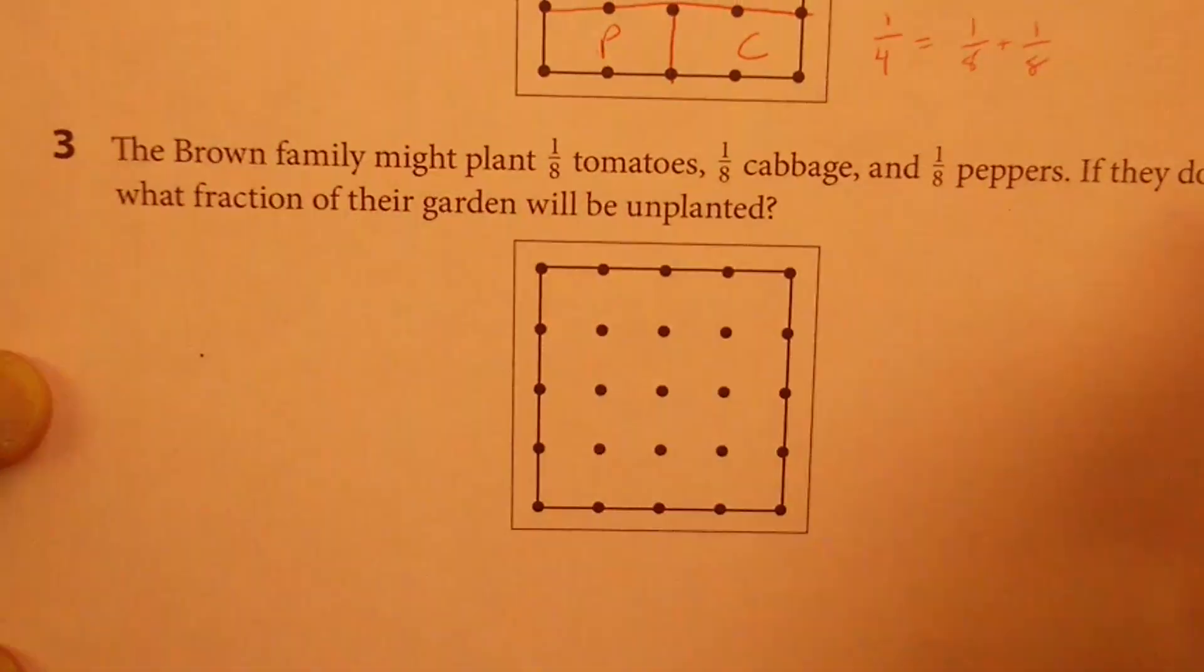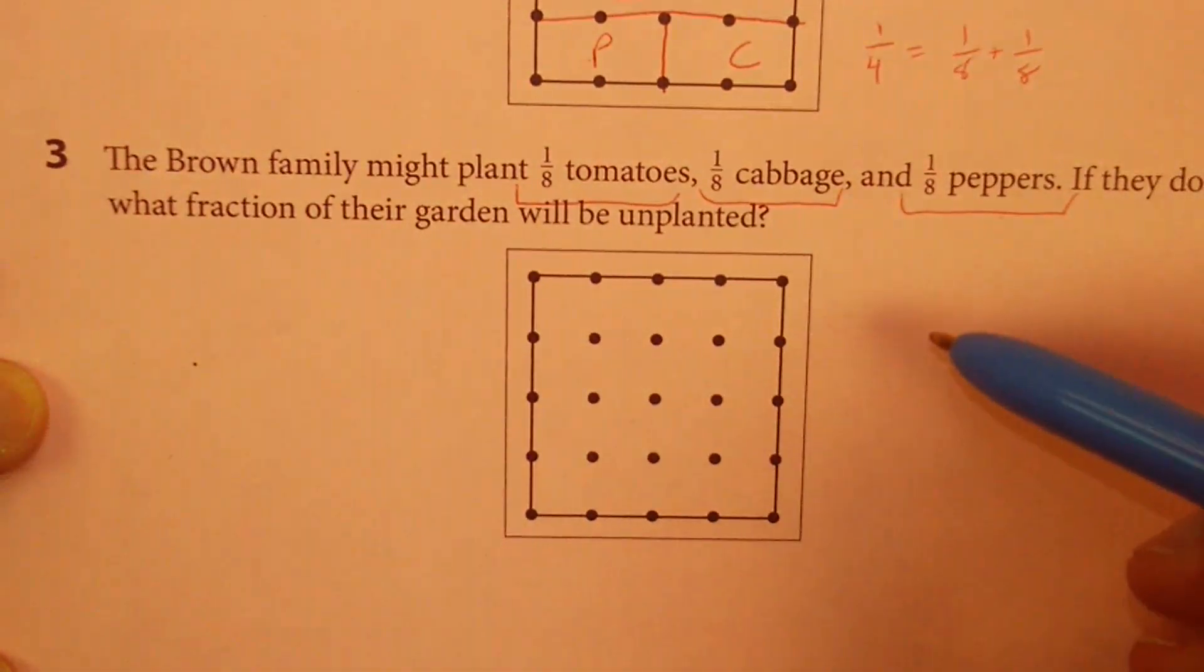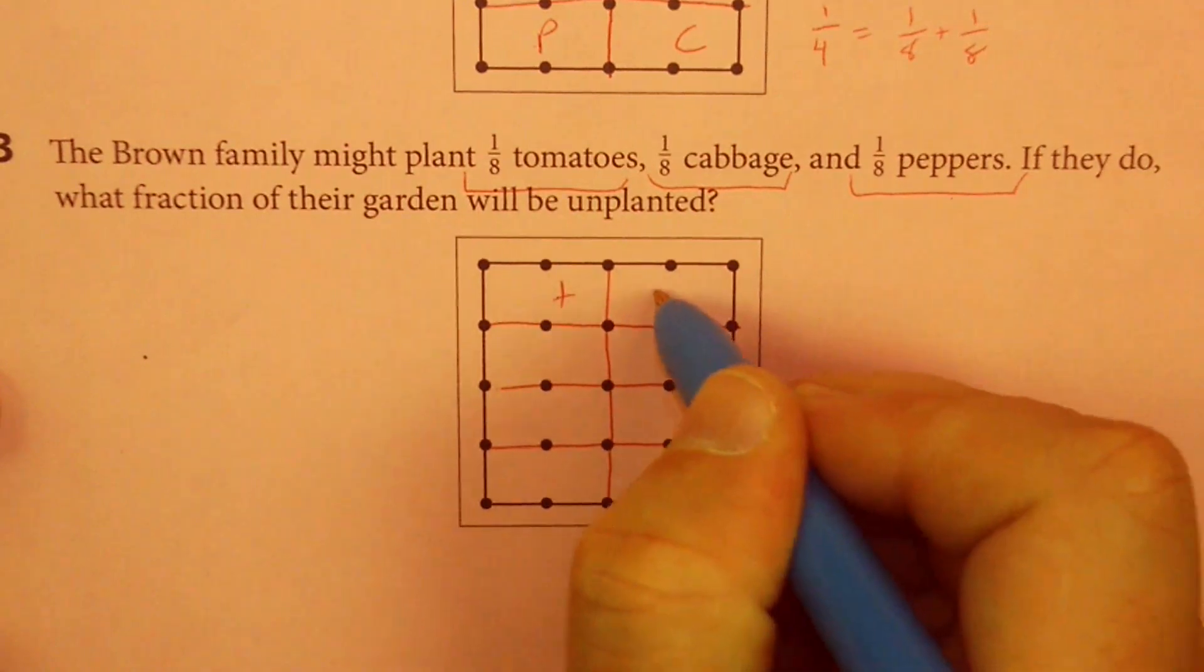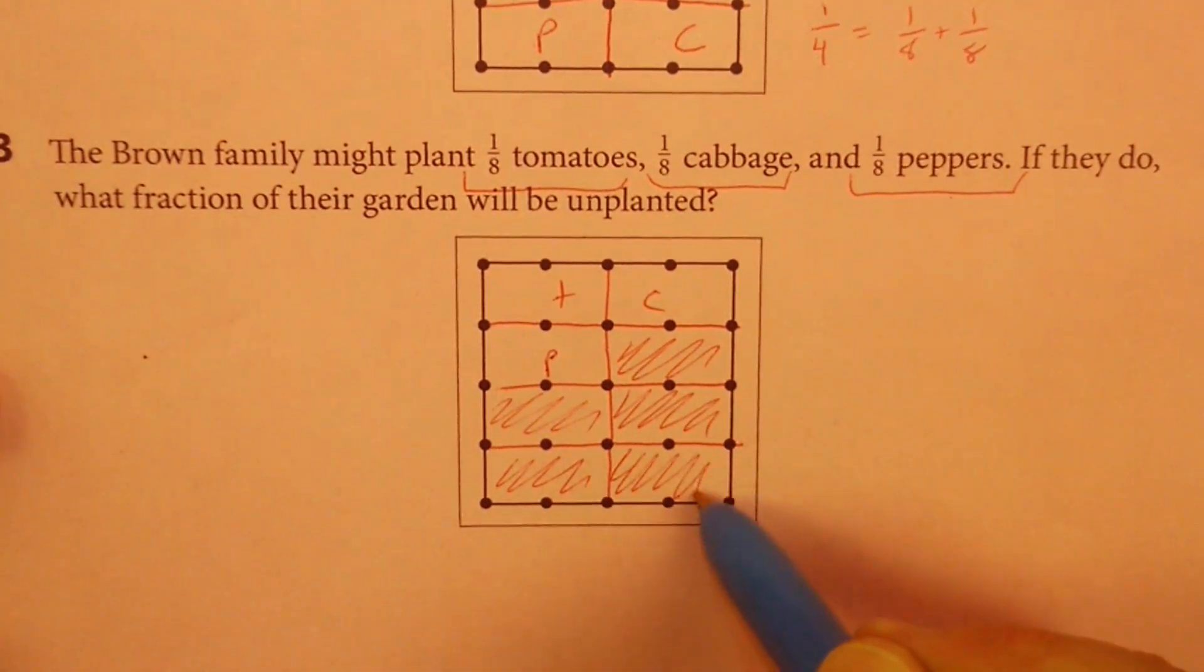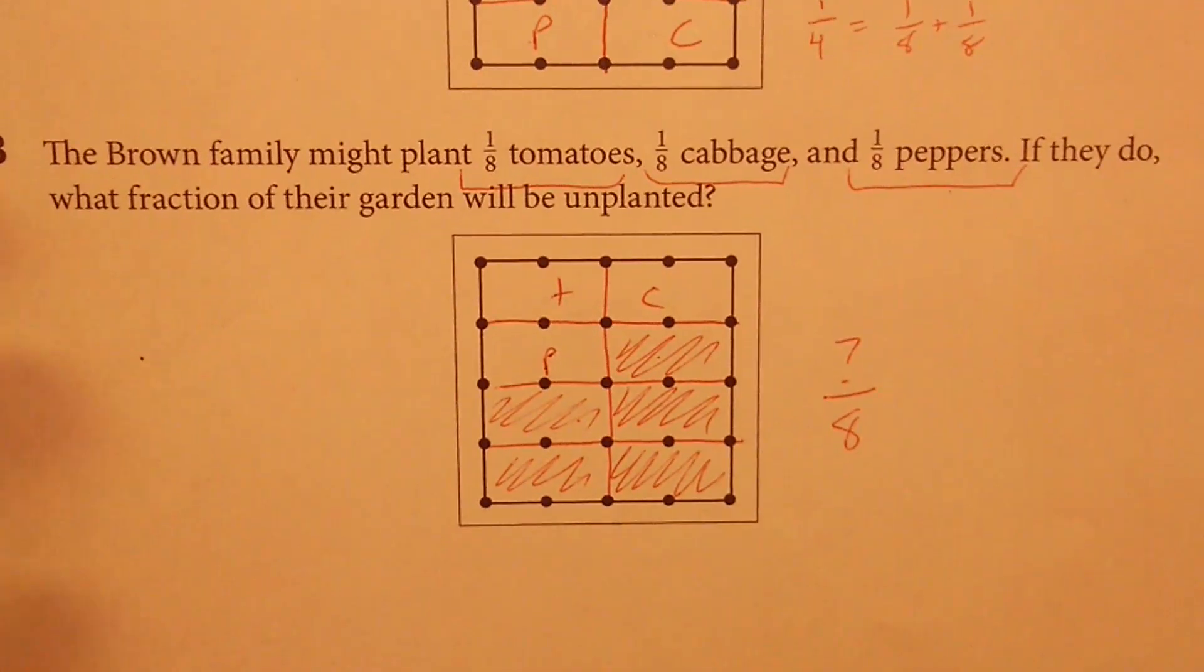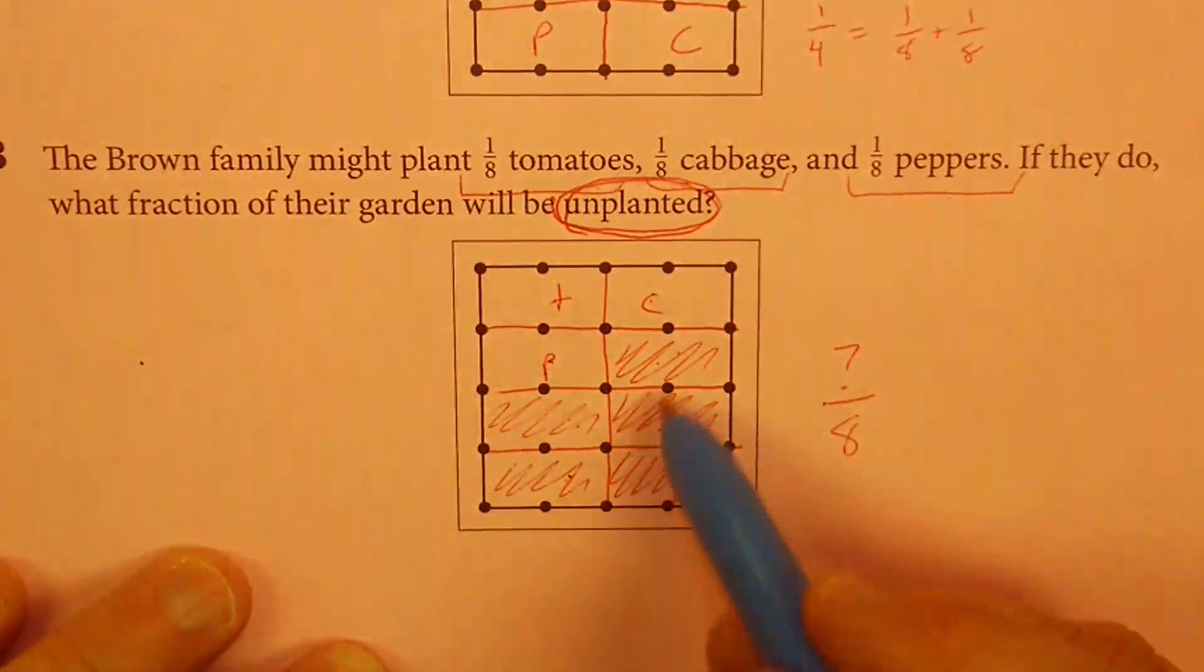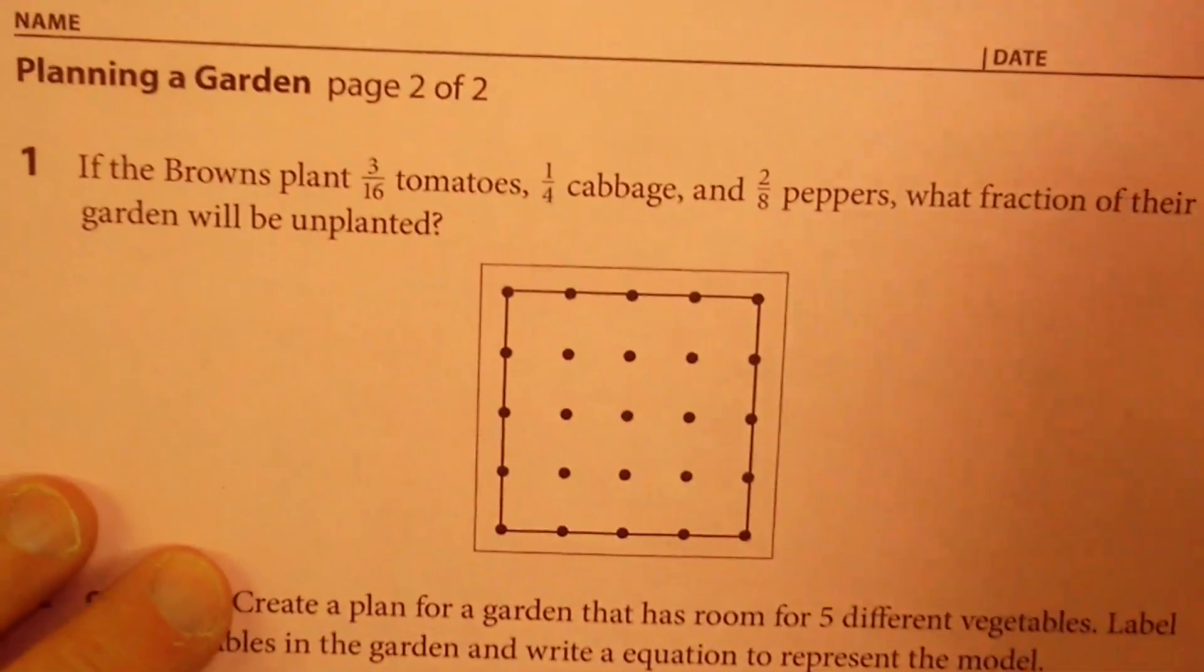The Brown family might plant this way, one-eighth tomatoes, one-eighth cabbage, one-eighth peppers. If we do it that way, how much of our garden will be unplanted? Well, we're only working with eighths, so let's split our garden into eighths. We have eight pieces. Let's label it with tomatoes, cabbage, and peppers. And then how much of this is unplanted? I want you to list that as a fraction, the number of ones that are unplanted over eight. So you're going to put a number over eight there. I'm going to leave that up to you. We're talking about the number that are unplanted. Because right now, three-eighths is planted. Our shaded-in ones are not planted. So it's going to be some number over eight. Always pause this video if you need a second to think about it.